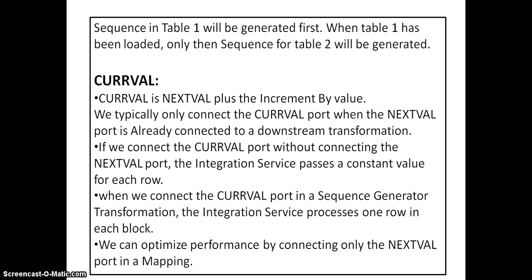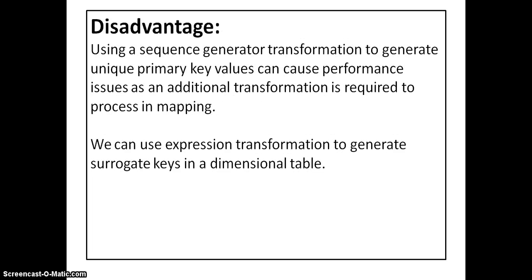When we connect the current value port in a sequence generator transformation, the integration service processes one row in each block. We can optimize performance by connecting only the next value port in a mapping. As for the disadvantage of sequence generator transformation, it can cause performance issues as it requires an additional transformation. We can overcome this by using an expression transformation implementing the same logic for surrogate keys.